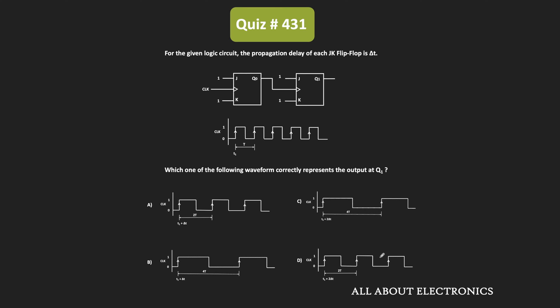Hey friends, welcome to the YouTube channel All About Electronics. In this question, we have been given a logic circuit where the propagation delay of each JK flip-flop is equal to Δt. This clock signal is applied to the circuit, and we have been asked to find which of the following waveforms correctly represents the output waveform at Q1.